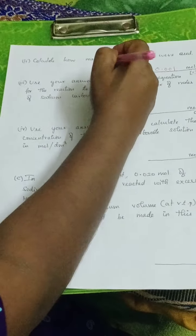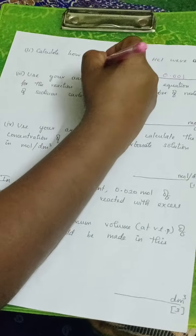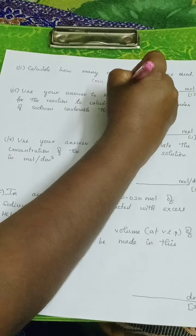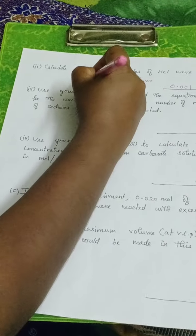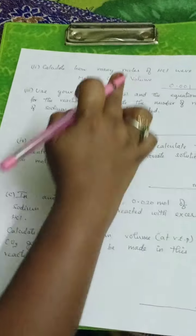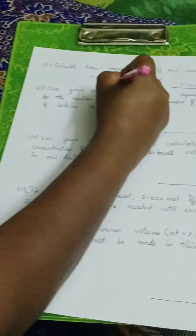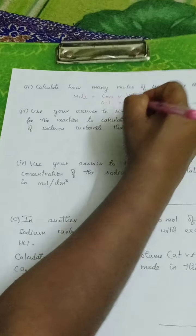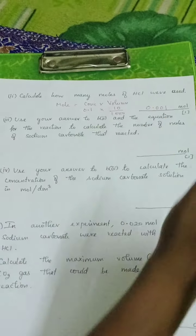What is the formula here? The formula is concentration into volume to find the mole. The concentration is 0.1 and the volume is 10 centimeter cube by 1000.